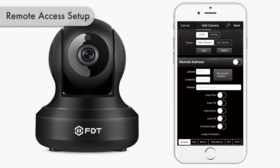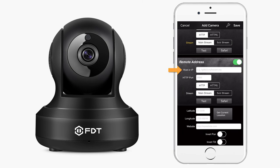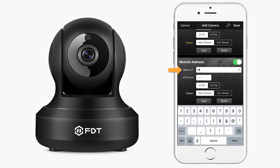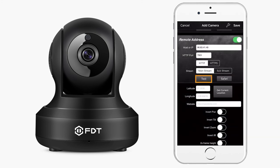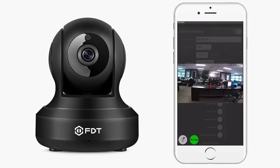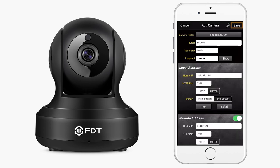Now we will fill out the fields under Remote Address. First, tap the toggle switch. In the Host or IP field, type in the external IP address you noted earlier — for example, 96.83.41.49. In the HTTP port field, type in your camera's port number — for example, 7901. When you are done, tap the Test button. If it appears successful, then you can access your camera remotely on the app. Finally, tap the Save button on the right corner of the screen to save your camera to the app.